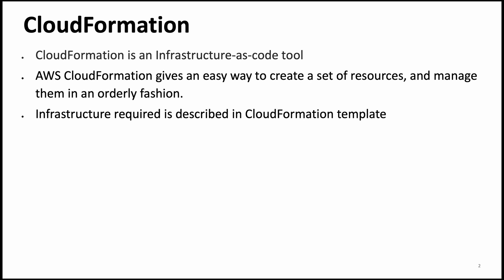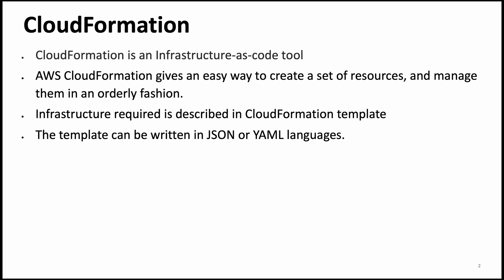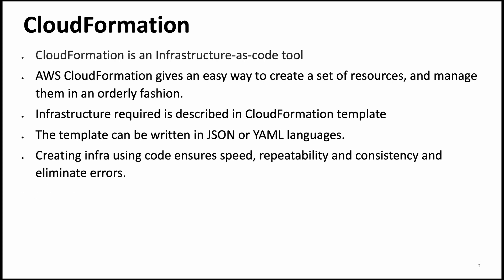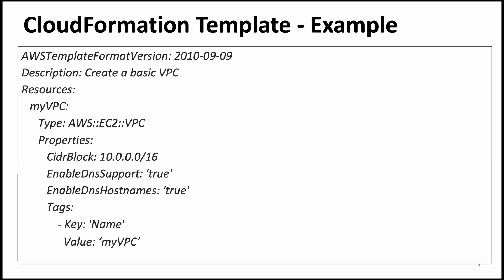So how do you use CloudFormation? You describe the infrastructure — whether you need a VPC or an EC2 — in a CloudFormation template, which can be considered a script. You write the script in JSON or YAML languages, and there are prescribed templates using which you describe your infrastructure including the resource type and configuration parameters. Creating infrastructure using code ensures speed, repeatability, and consistency, and it eliminates errors.